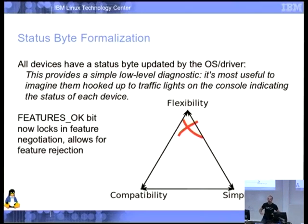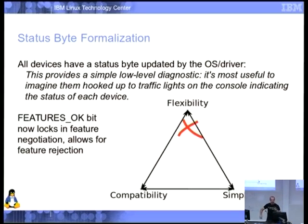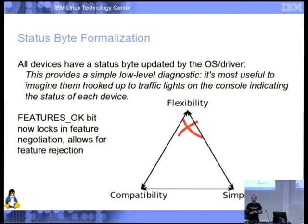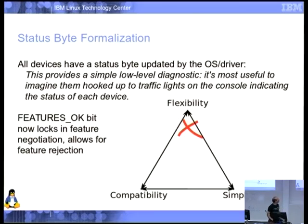While adding FEATURES_OK, we also added a way for devices to reject feature sets: in theory everyone should handle ancient devices that only accept none of your features, but in practice people won't. Now when the driver sets FEATURES_OK, the device can unset it again. The driver reads it back — if the device didn't like the accepted features, the driver knows not to drive the device. We ratcheted that in; we didn't gain much except flexibility.